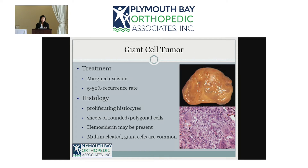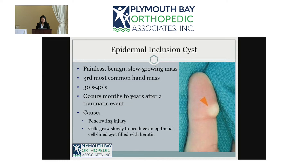Treatment for a giant cell tumor is excision, but it does have a high recurrence rate. The pathology, shown here, looks like a sheet of purple cells as well as large giant cells with multiple nuclei. You can also see hemosiderin deposits — the darker dots — in the tissue.